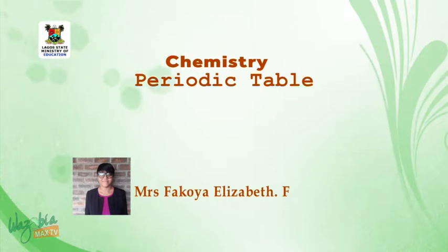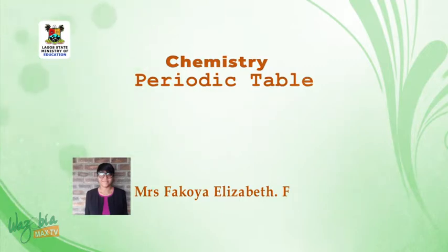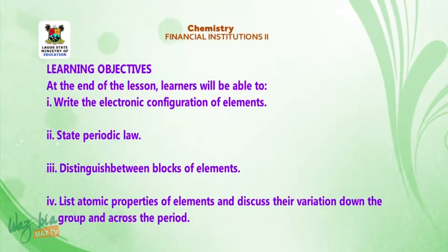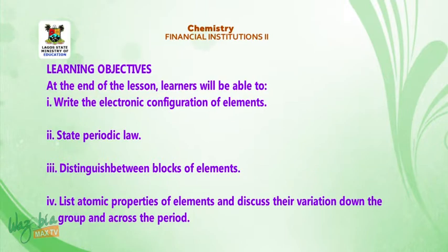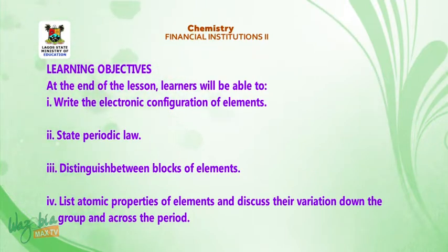Today we shall be discussing the periodic table. Learning objectives for this lesson: at the end of the lesson, learners will be able to: 1. Write the electronic configuration of elements. 2. State periodic law. 3. Distinguish between blocks of elements. 4. List atomic properties of elements and discuss their variation down the group and across the period.